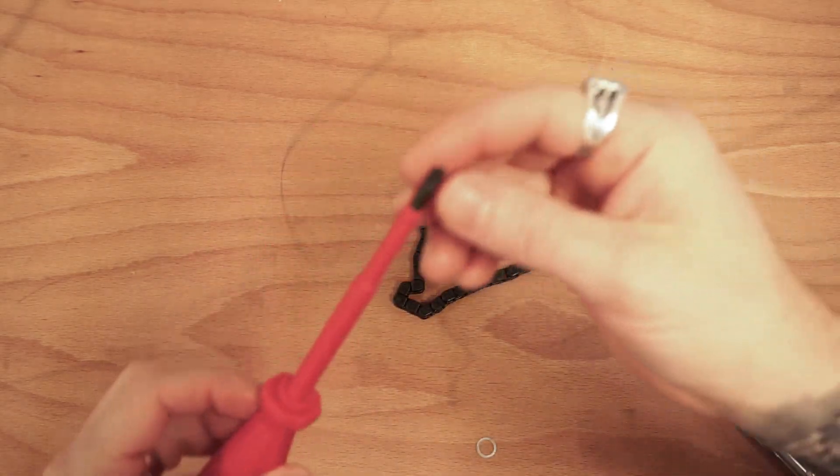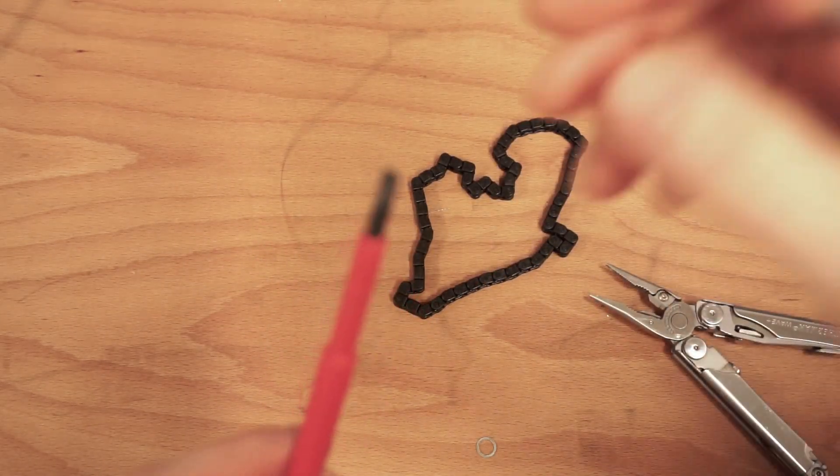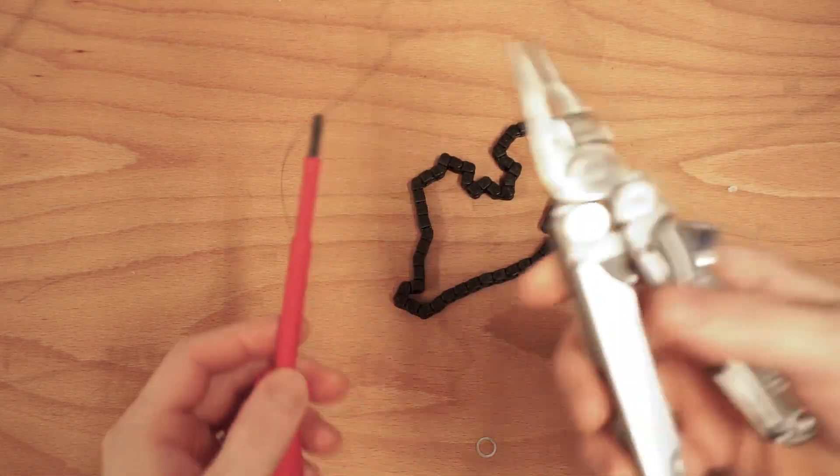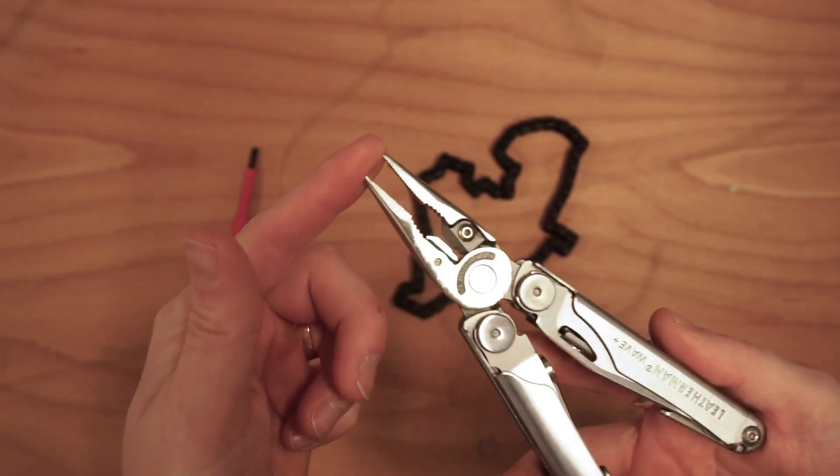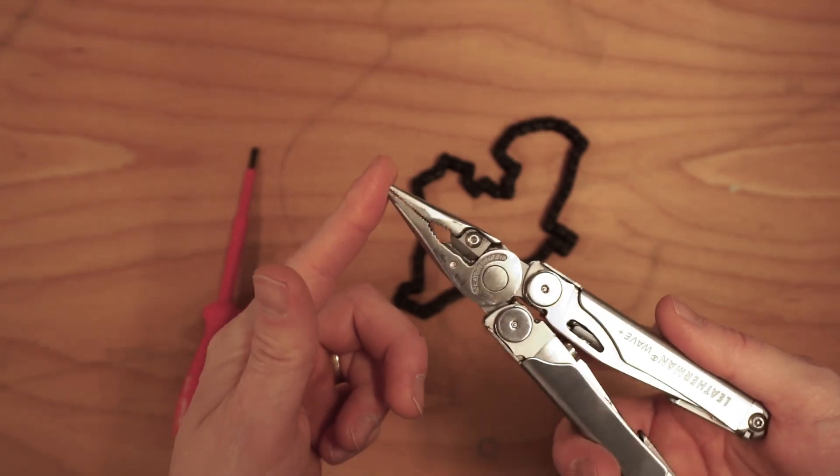So when you're working with plastic chain, first thing you're going to want is a slot screwdriver as a tool and you're also going to want some needle nose pliers. Needle nose pliers are super useful for being able to hold on to these things.